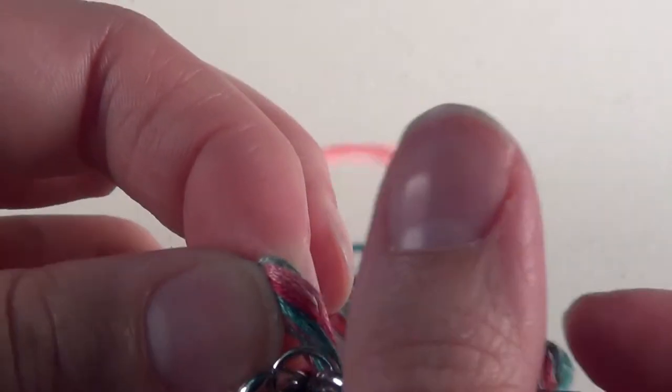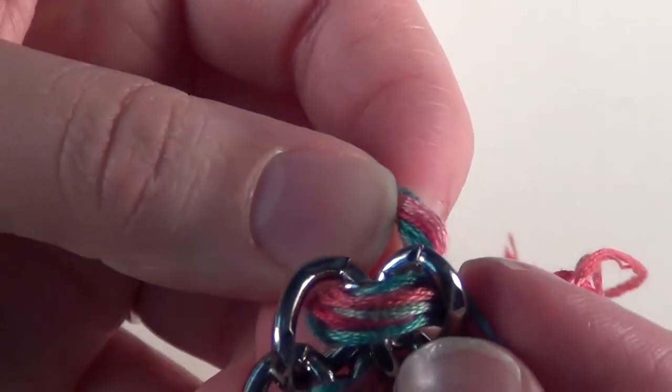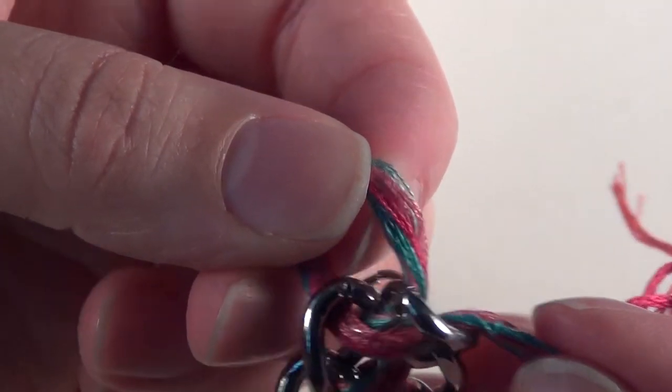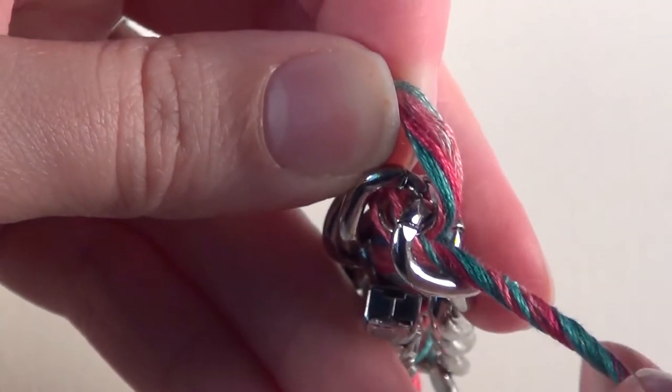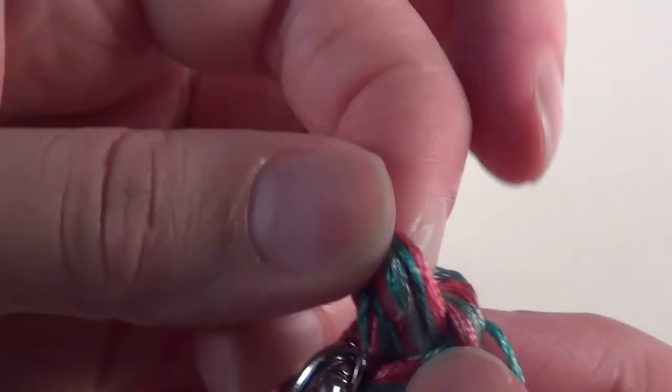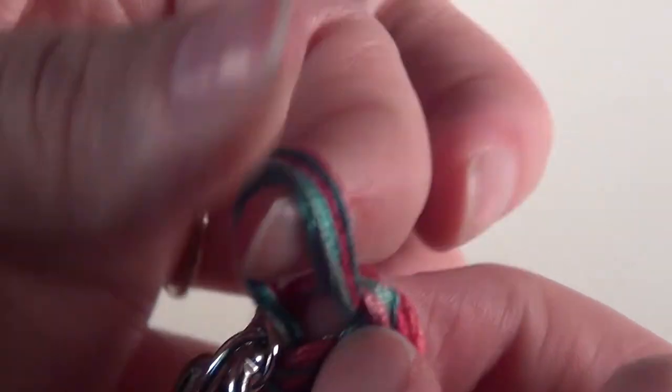Now that I'm at the end of my bracelet, I have wrapped my floss through the last two links a second time. Before I finish it off, I'm going to basically tie it in a knot with that last loop and pull it tight.